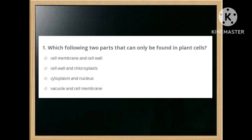Which of the following two parts can only be found in plant cells? Options are: cell membrane and cell wall, cell wall and chloroplast, cytoplasm and nucleus, vacuole and cell membrane. The answer is: cell wall and chloroplast.